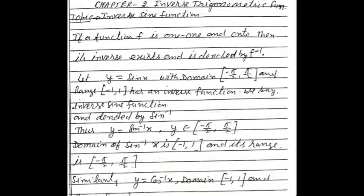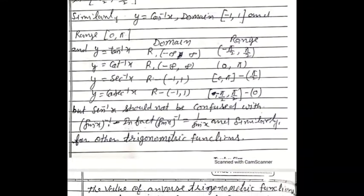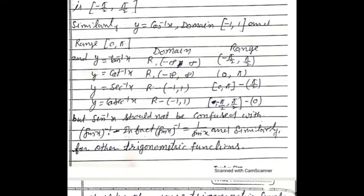Similarly, y = cos x has domain [−1, 1] and range [0, π]. The inverse function y = cos⁻¹x has domain [−1, 1] and range [0, π].